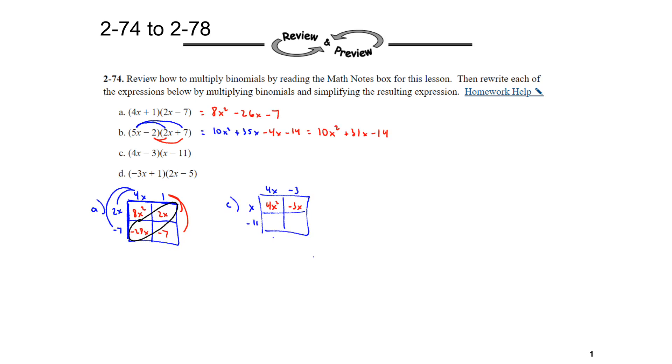4x times x is 4x squared. Negative 3 times x is negative 3x. 4x times negative 11 is negative 44x. And negative 3 times negative 11 is a positive 33. Just make sure in the area model that you don't just stop. You do have to write the final answer. So this would be 4x squared minus 47x plus 33.